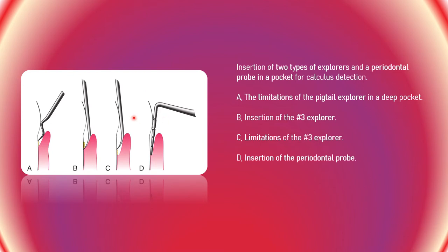These pictures show an explorer and a probe. In the first picture, a pigtail explorer is in a deep pocket and cannot extend beyond a certain area. In the second picture, a number 3 explorer can insert well, but where there is significant recession, it cannot reach the recession area. However, a probe can easily go into the gingival sulcus when there is recession.